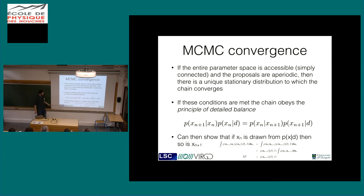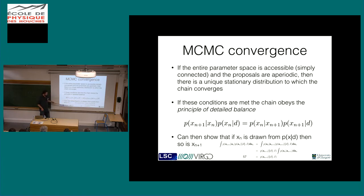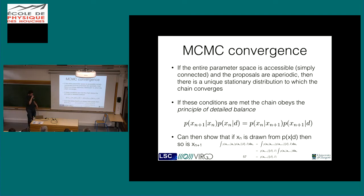Ignoring the Hastings part and just looking at the original Metropolis algorithm, it obeys the principle of detailed balance: the overall probability of being at one point and taking a jump to a new point is the same as being at that new point and taking a jump to the previous point. If you then marginalize this over all the possible starting points, the resulting distribution of the new point is indeed the distribution you were trying to sample. If you include the Metropolis-Hastings Q factor, the proof goes roughly the same way.